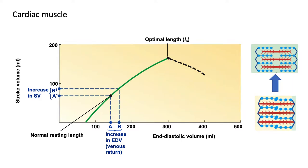This increase in stroke volume associated with stretching the heart is called Starling's Law: increased stretching equals increased stroke volume, due to increasing contraction strength. The dashed portion of the figure shows what happens with over-stretching, but unlike skeletal muscle, cardiac muscle doesn't really drop off past optimum in a clinically relevant way.